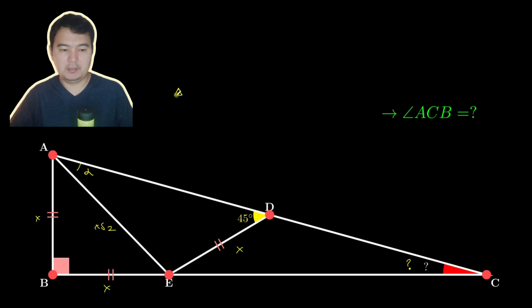In triangle AED, if you use sine theorem, x over sine alpha is equal to x root 2 over sine 45.